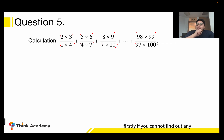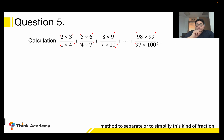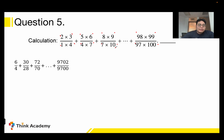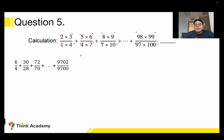Firstly, if you cannot find any method to separate or simplify this kind of fraction, why not calculate first? We can calculate: 2×3 = 6 over 1×4 = 4, giving 6/4; then 5×6 = 30 over 4×7 = 28, giving 30/28; then 8×9 = 72 over 7×10 = 70, giving 72/70; and so on up to the last term.